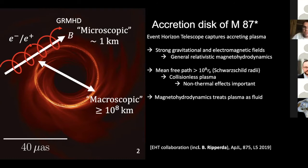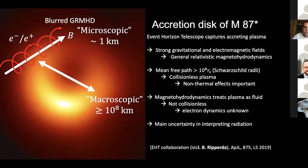But the magnetohydrodynamics framework treats the plasma as a fluid, and this fluid is not collisionless. So we're actually unaware of what the electrodynamics do and how they affect the radiation that we observe. This gives the main uncertainty in interpreting the EHT image, and usually this is only done in post-processing — we sort of guess what the electron dynamics are.